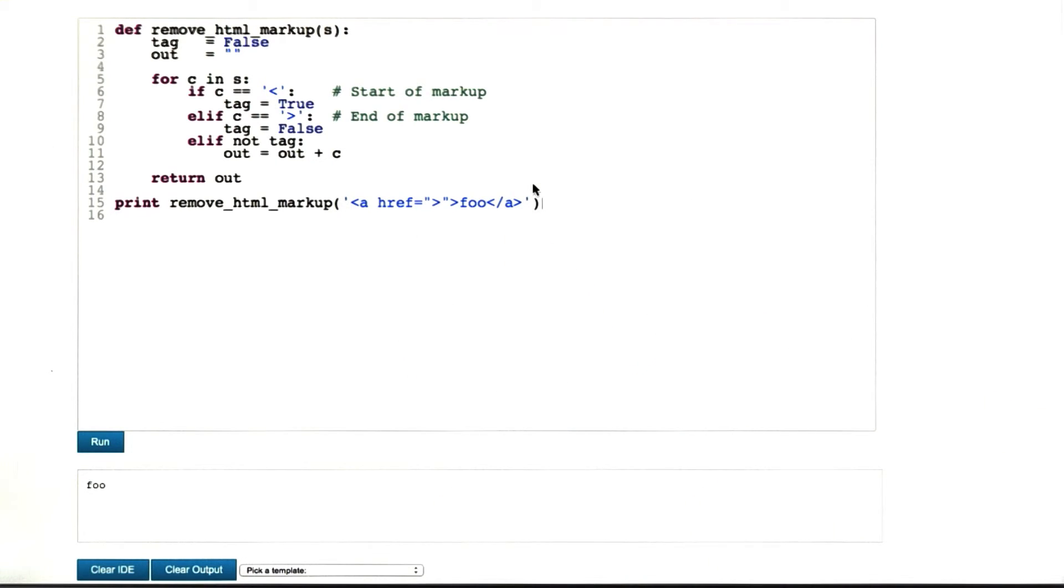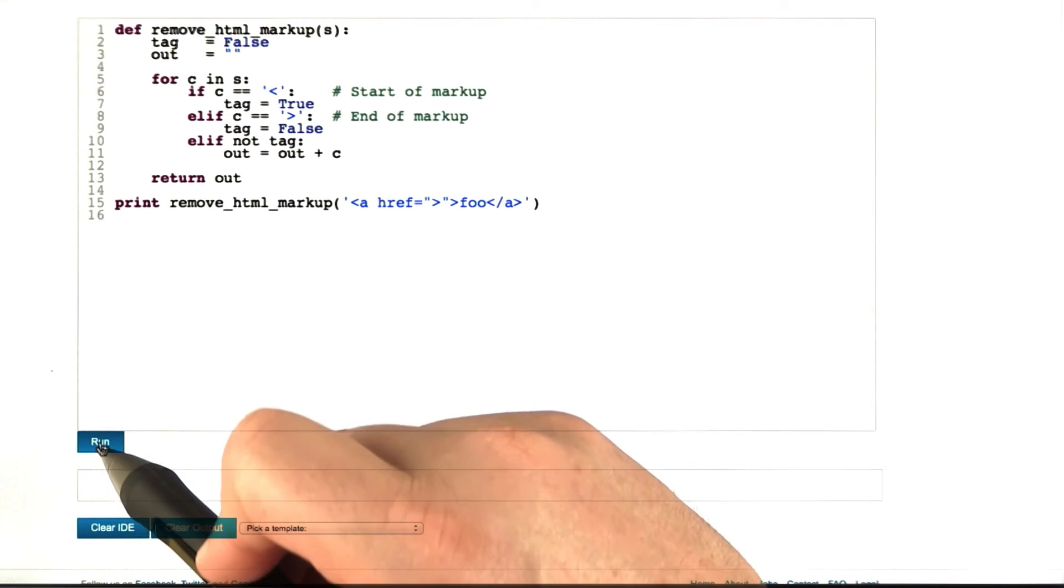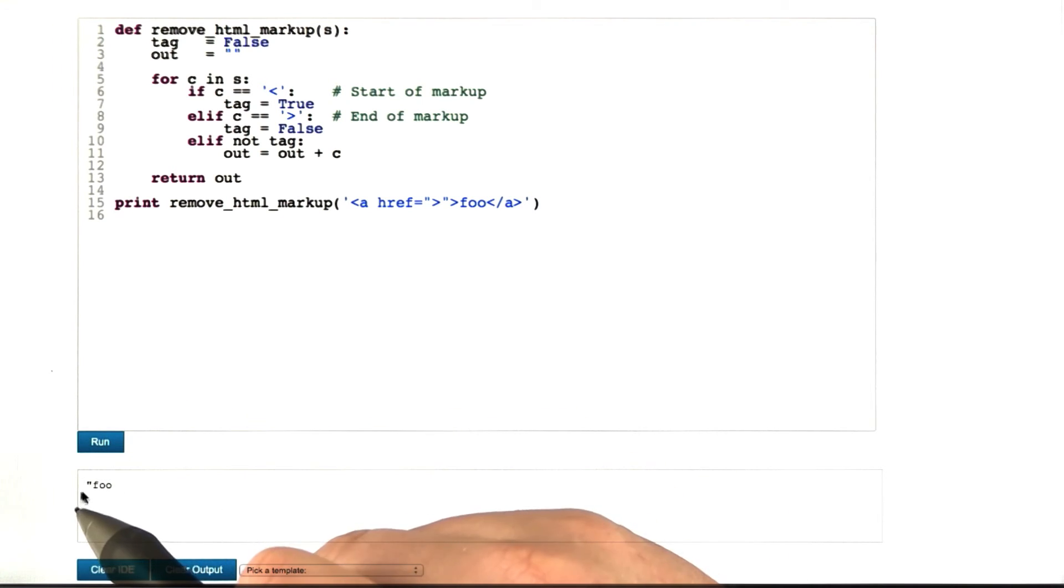Here's our input with greater than in double quotes. We run the whole thing and we see that the output indeed contains part of the HTML markup. That is, the double quote is still in there.